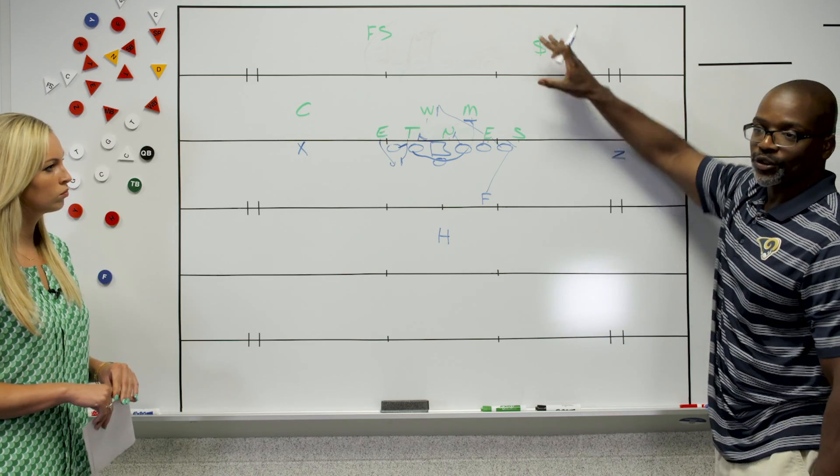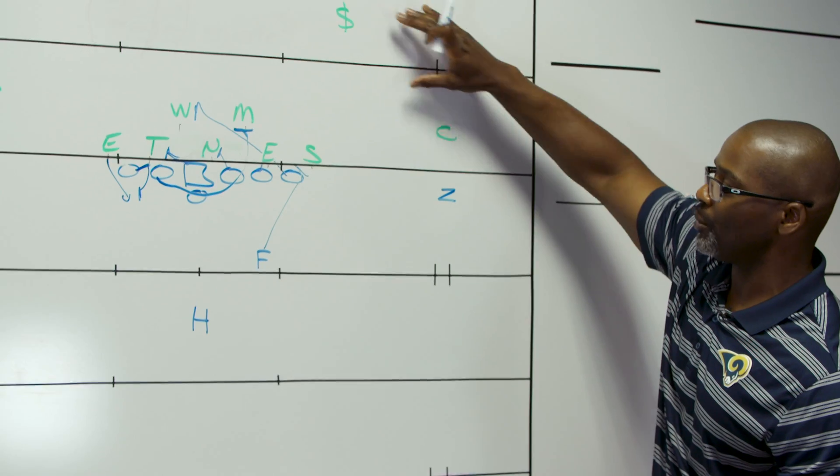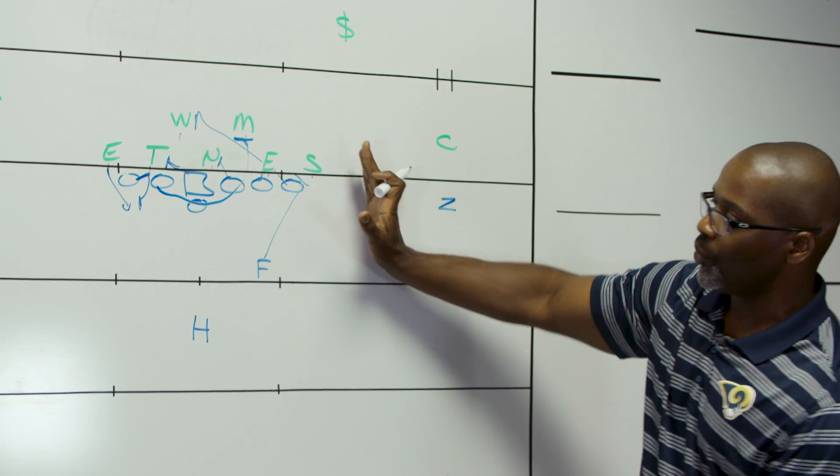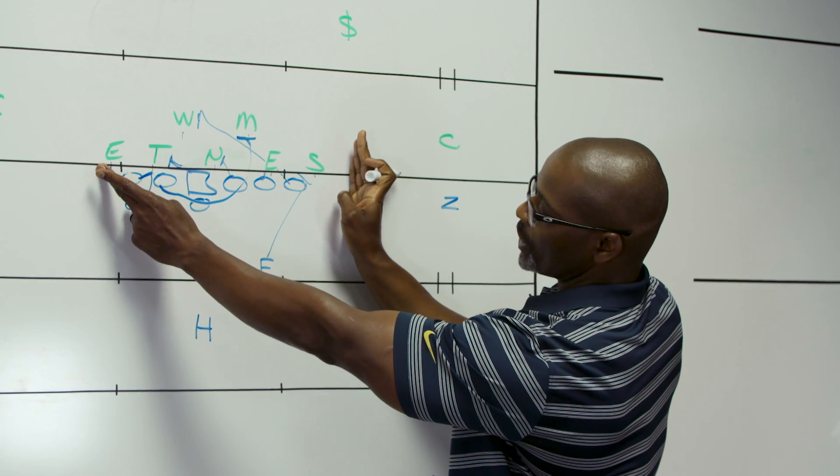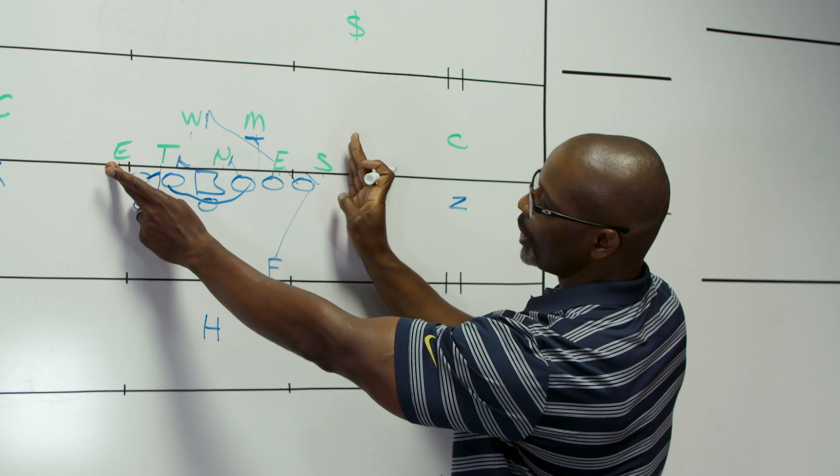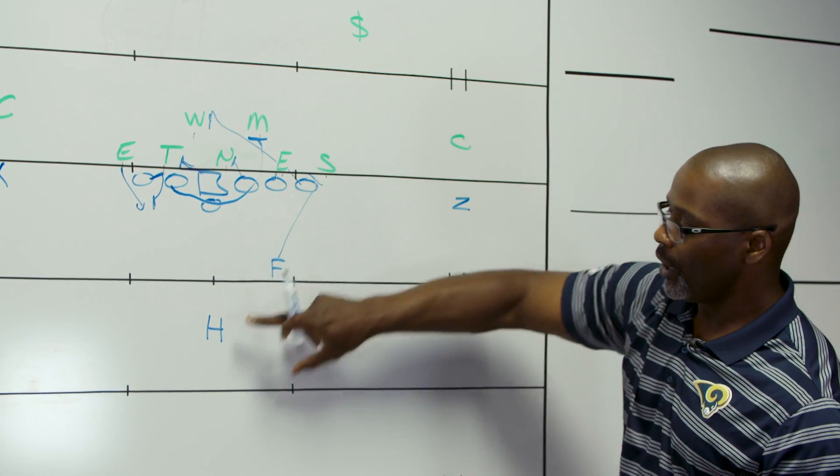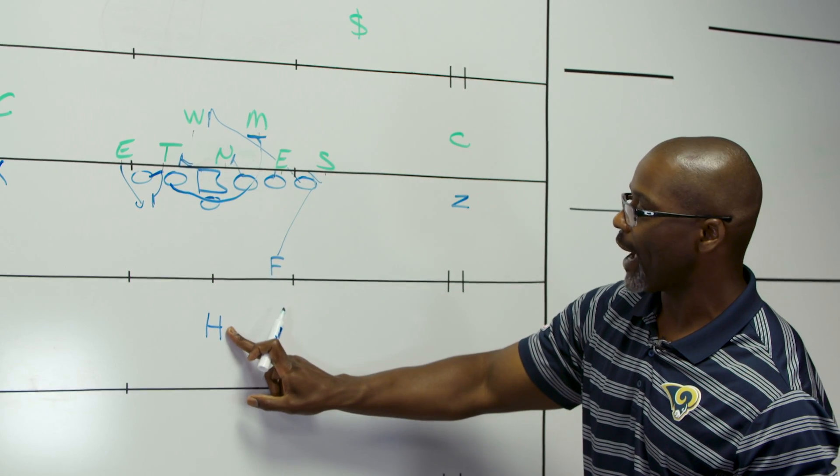Now, this is where your safeties and whoever has run support come into play. Because what a lot of defenses like to do is once they build what they think is a wall with a gap responsibility, is the next thing they'll do is utilize one of these safeties to be a run support versus the halfback.